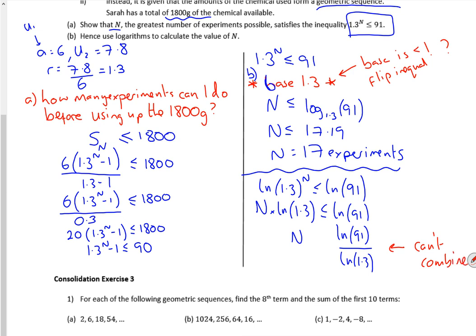People get the log laws wrong. If it was ln of 91 minus ln of 1.3, you could combine it, or ln of 91 over 1.3. But that don't work. Right. Now this bit here, we're going to confirm that it's definitely a 1. So your log graph is negative for anything below 1. So if this bit here was log of 0.8, it would give me a negative value, which would mean that I would need to flip the inequality.